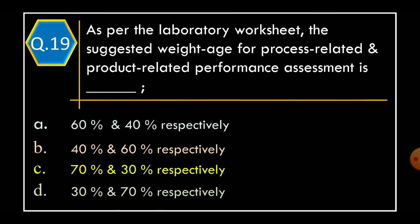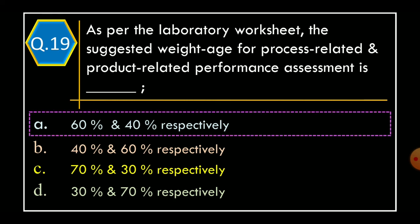Question 19. As per the laboratory worksheet, the suggested weightage for process-related and product-related performance assessment is: Option A. 60 and 40%. Option B. 40 and 60%. Option C. 70 and 30%. Option D. 30 and 70%. The correct option is Option A: 60 and 40%.